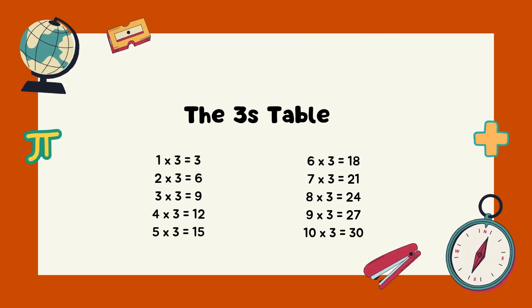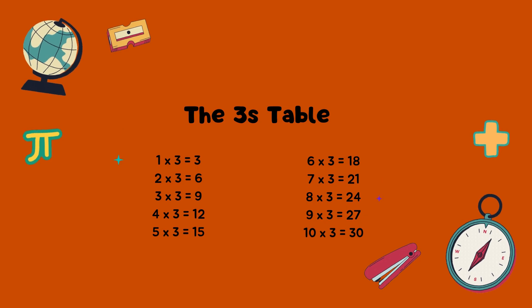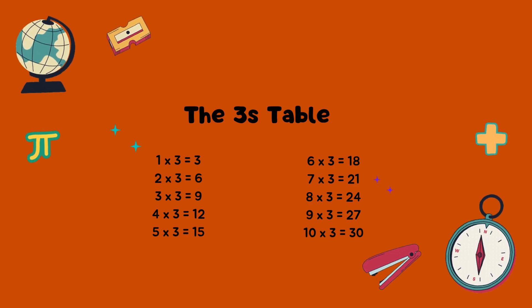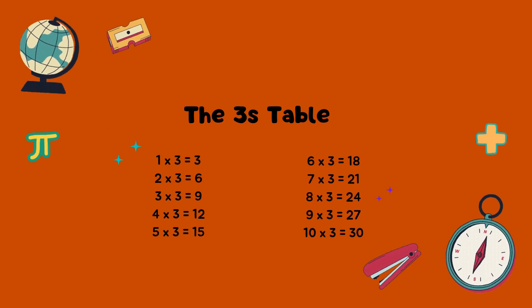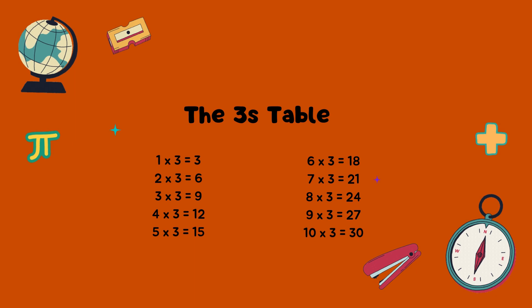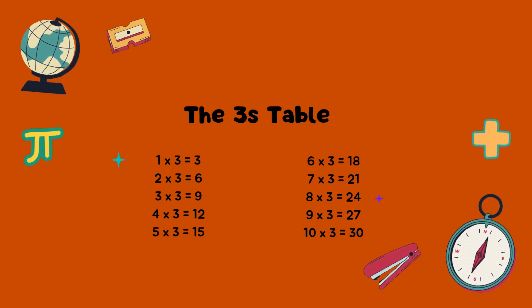The threes table. 1 times 3 equals 3. 2 times 3 equals 6. 3 times 3 equals 9.